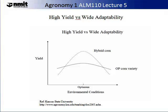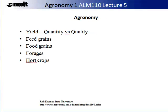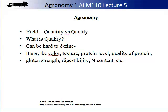In agronomy, we have to think not only about yield as a quantity but also as a quality, as often we are paid on quality. This applies to feed grains, food grains, forages, or horticultural crops. What is quality? In fact, it is a term that industries like viticulture have moved away from in recent years, preferring to use chemical composition or consumer preference. Quality can be hard to define — it may be a colour, a texture, a protein level, gluten strength, digestibility, or nitrogen content, or a combination of many of these features.